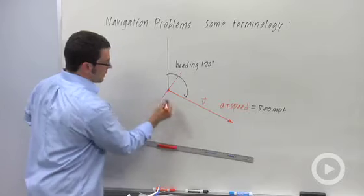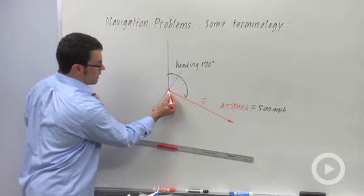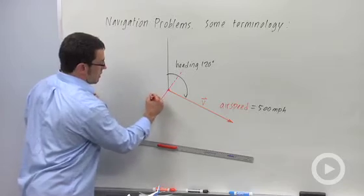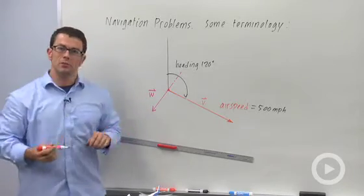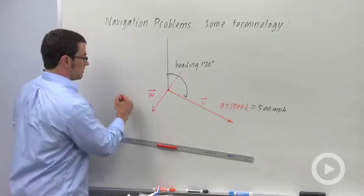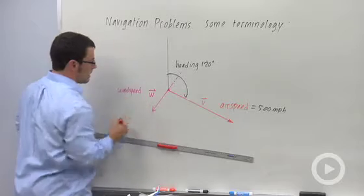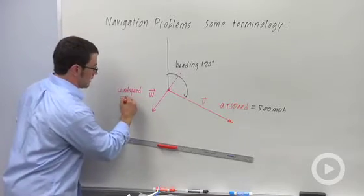The wind vector starts at this point and goes here. We're imagining that the airplane is right at this point. I'll call the wind vector w. The magnitude of this vector is the wind speed. The wind speed, maybe it's going to be 50 miles per hour.